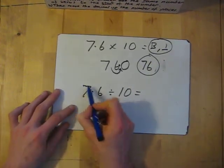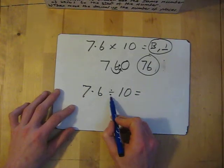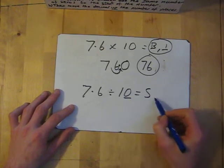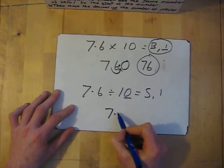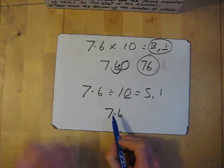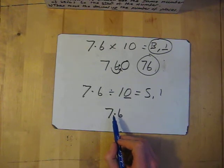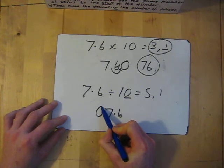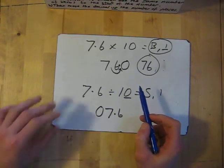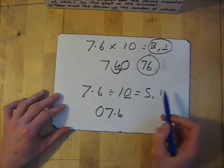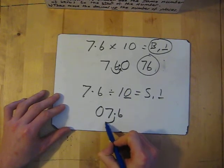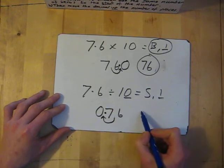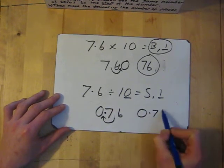Same for dividing: 7.6 divided by 10. Ask yourself bigger or smaller — it's going to be smaller. How many places — it's going to be one. Write my number, 7.6. Remember, if the answer is smaller, add the same number of zeros to the start of the number. So I put my zero there. Then move the decimal point up the number of places — one place. So my answer becomes 0.76.